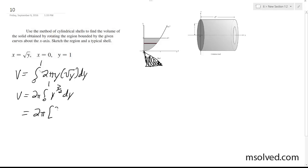It's equal to 2π times 2 fifths y to the 5 halves, 0 to 1. So it's 2 fifths, which is pretty much 2π times 2 fifths, which is equal to 4π over 5.